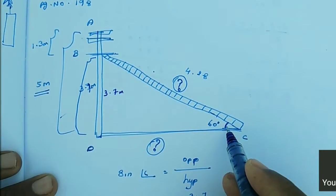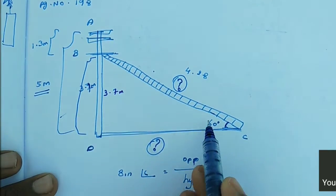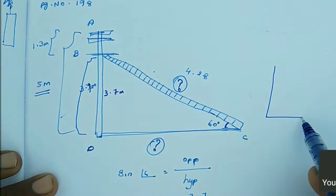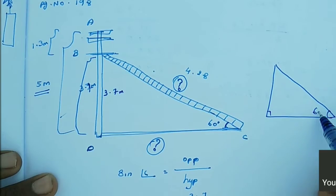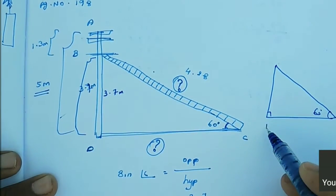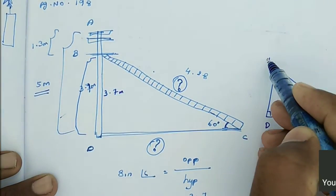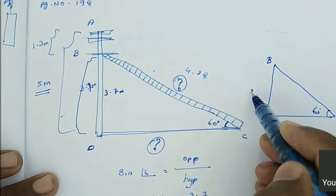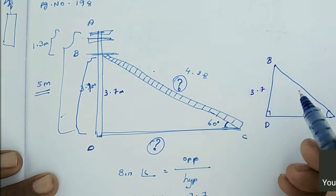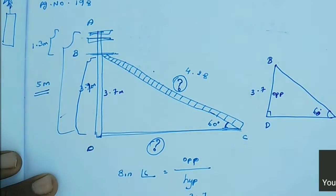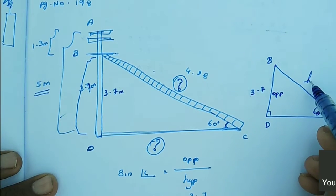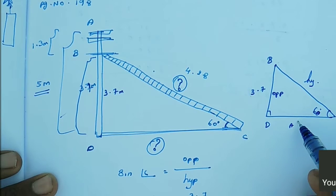So I consider triangle D, C, B separately. 90 degrees and 60 degrees. DC is 3.7, which is opposite to the 60 degree angle — that is the opposite side. We need to find the hypotenuse as well as the adjacent side.